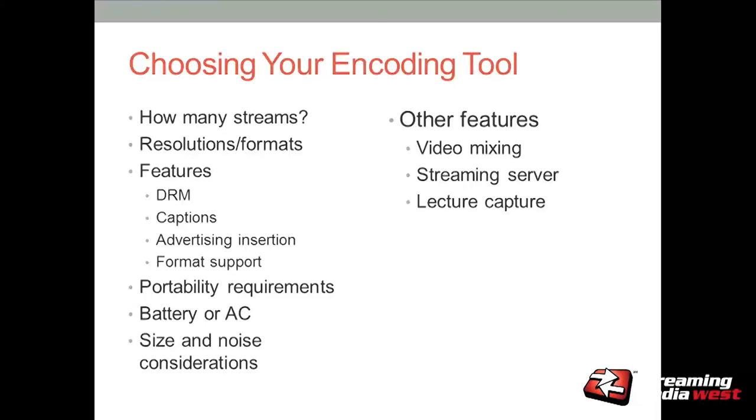Size and noise considerations matter too — if you're broadcasting from a conference room, you need a different live encoder than for a concert hall. Other features to consider: do you need video mixing from a hardware or software product? Do you need a streaming server? Do you need lecture capture — the ability to capture a signal, send it out to a school, and mix different feeds in that device? We'll see encoding examples for all these scenarios.